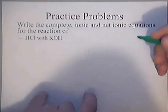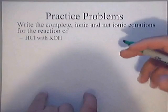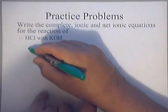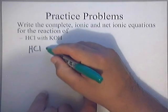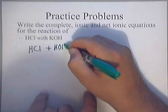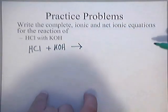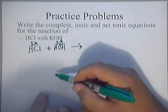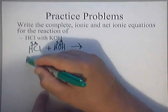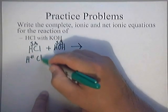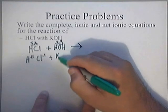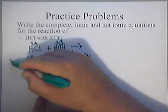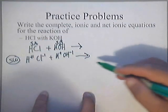First thing we're going to do is figure out some scratch work to get ready to write the complete, then the ionic, and the net ionic equations. So we have HCl plus KOH yields something — let's go find out what that something is. HCl is a strong acid and KOH is a strong base; they dissociate 100% into ions. Now remember, this is just my scratch work — it's meaningless, but it gets my ideas in order.